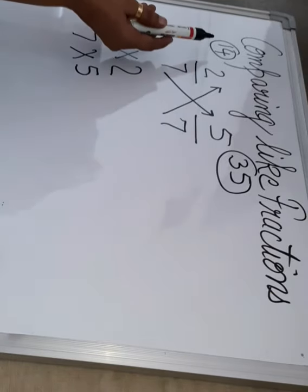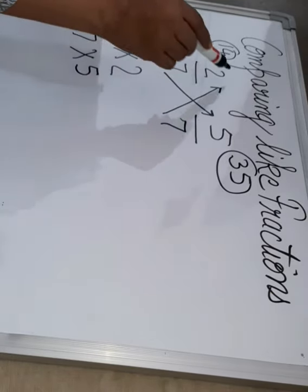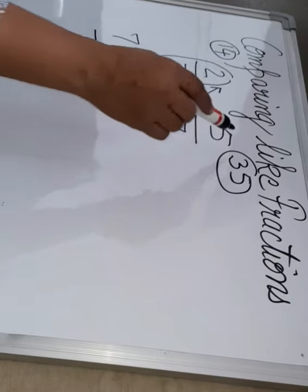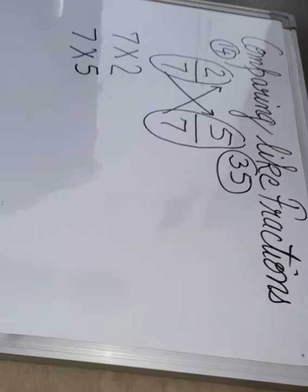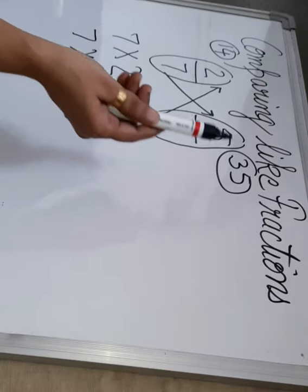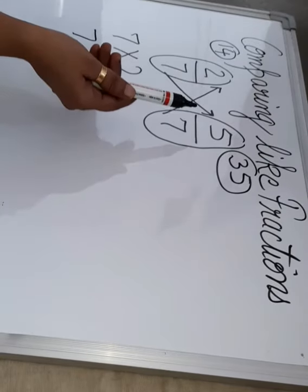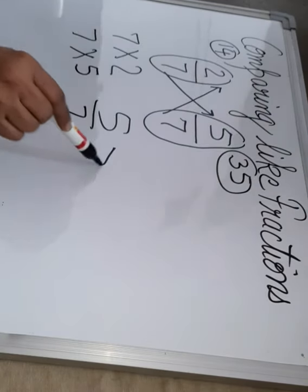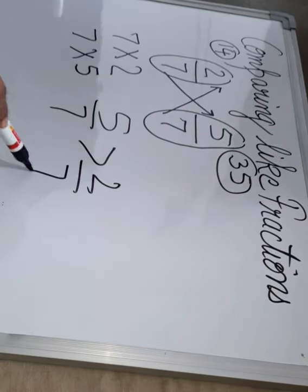So now you can compare. We got 14 for this fractional number and 35 for this fractional number. So which is bigger? 35 is bigger. So 5 by 7 is greater than 2 by 7.